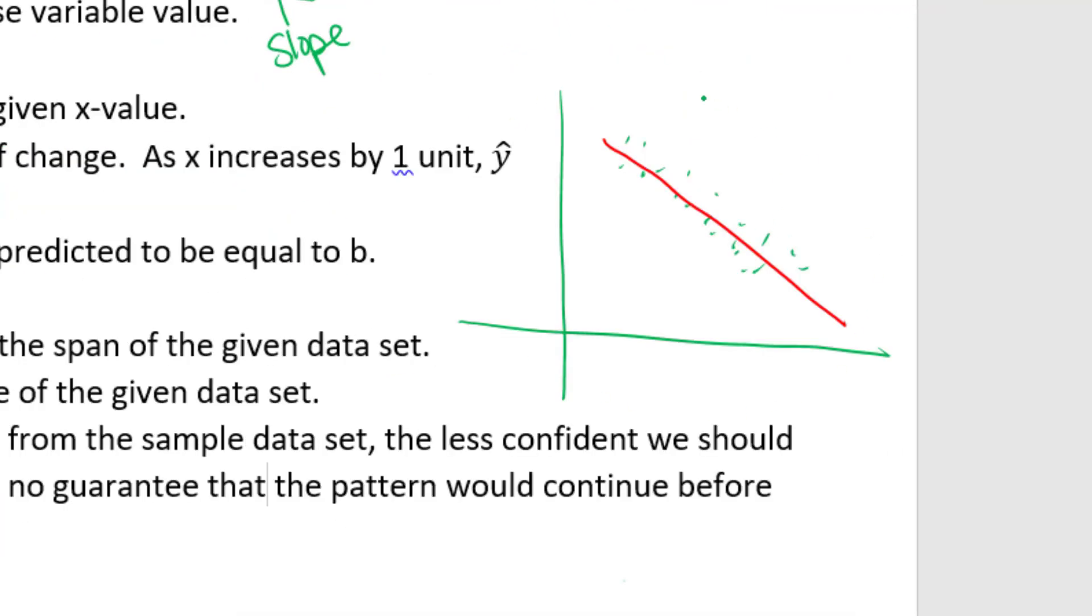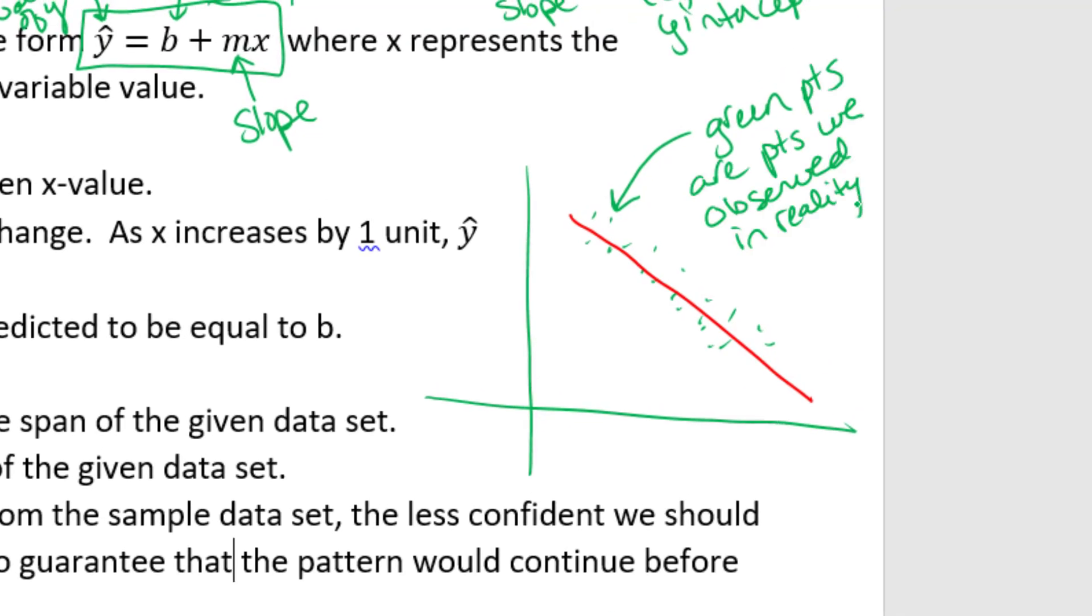Let me show you what I mean by that. Okay, so here I've drawn another little scatter plot. So my scatter plot is in green. And remember, that means the green points are actual observed data points from reality, meaning I went out in the world and I actually observed these points.